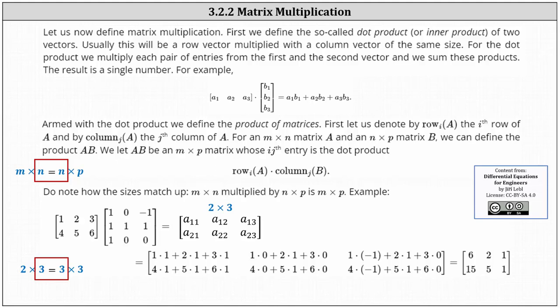Before we define matrix multiplication, let's define the dot product or inner product of two vectors. Usually this is a row vector multiplied by a column vector of the same size. For the dot product, we multiply each pair of entries from the first and second vector, and we sum these products. The result is a single number. For example, vector a is expressed as a row matrix, or more specifically a one by three matrix, and vector b is expressed as a column matrix, or more specifically a three by one matrix. The dot product or inner product is equal to a1 times b1 plus a2 times b2 plus a3 times b3.